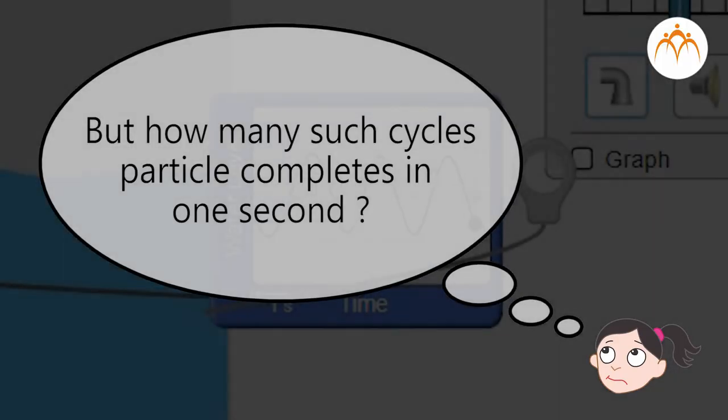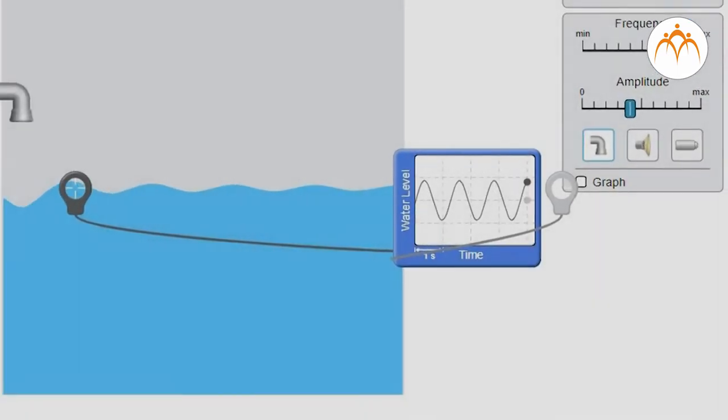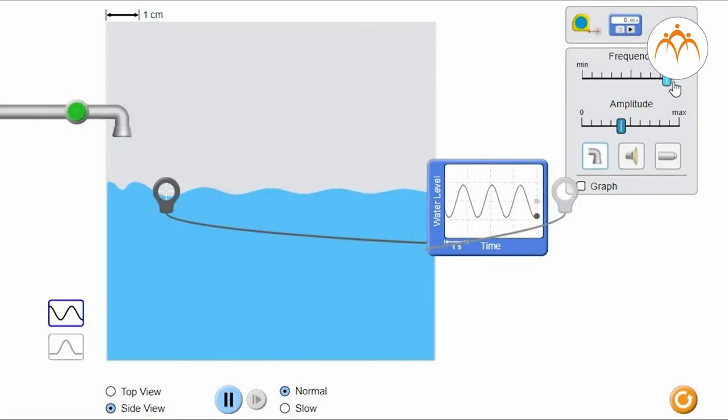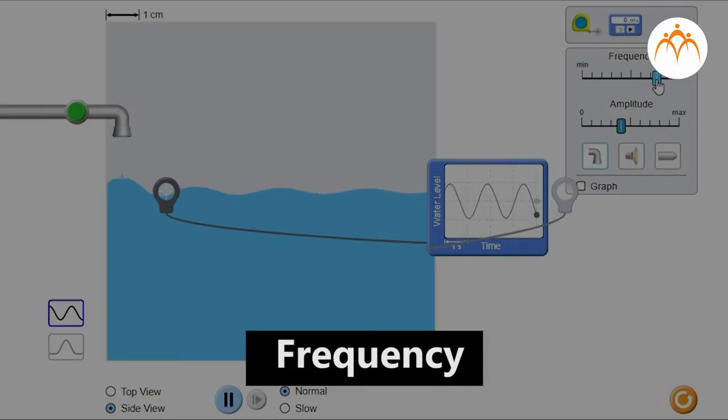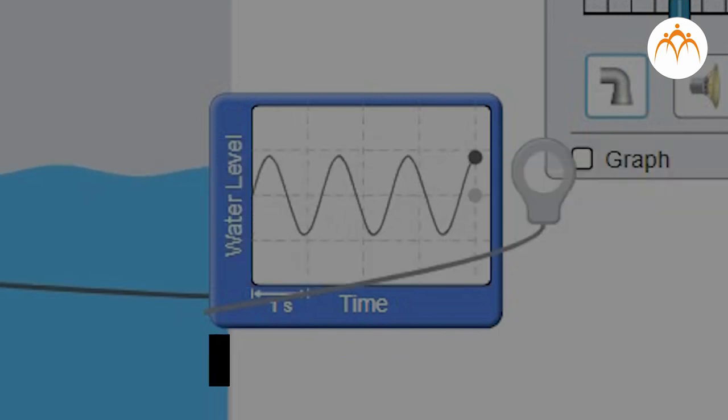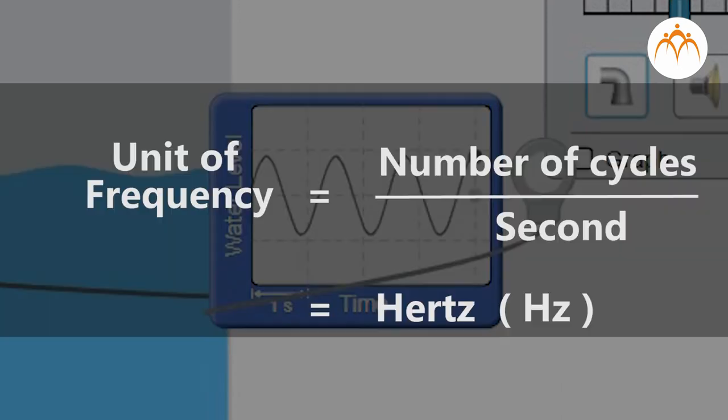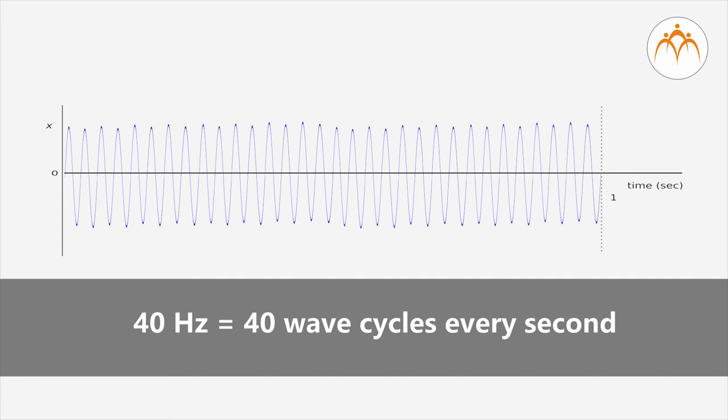But how many such cycles does the particle complete in one second? In other words, we want to know how frequent this wave cycle is happening at a given point. This is known as the frequency of the wave. Frequency of the wave is the number of cycles that are completed in a certain amount of time. The symbol for frequency is lowercase f. We measure it in cycles per second, which is the same as the unit hertz. A wave with a frequency of 40 hertz completes 40 wave cycles every second.